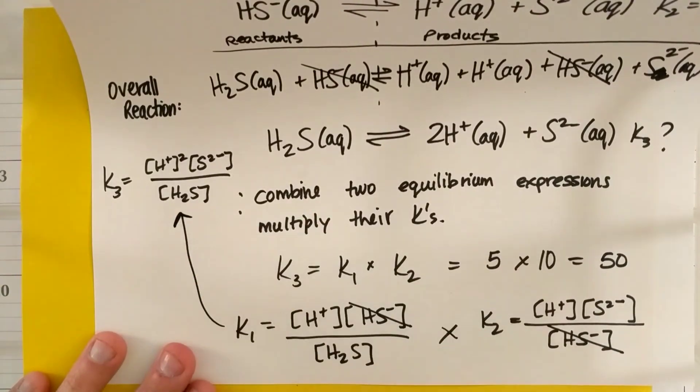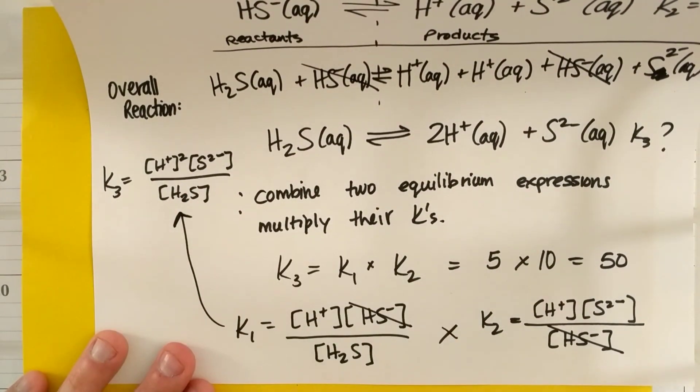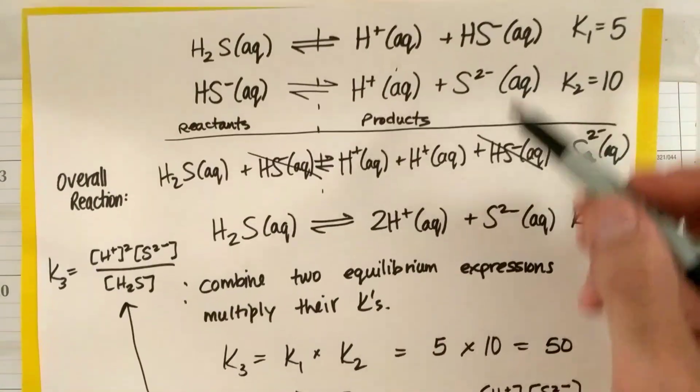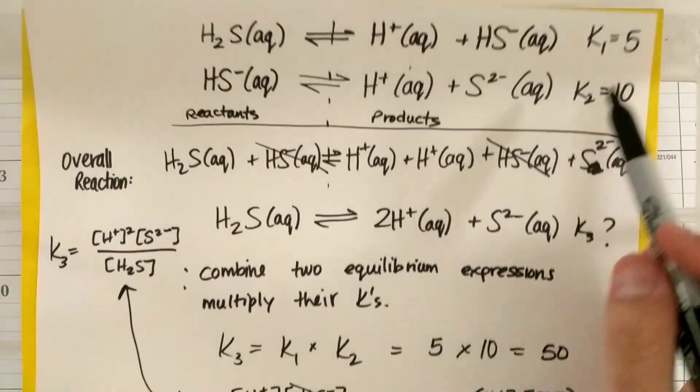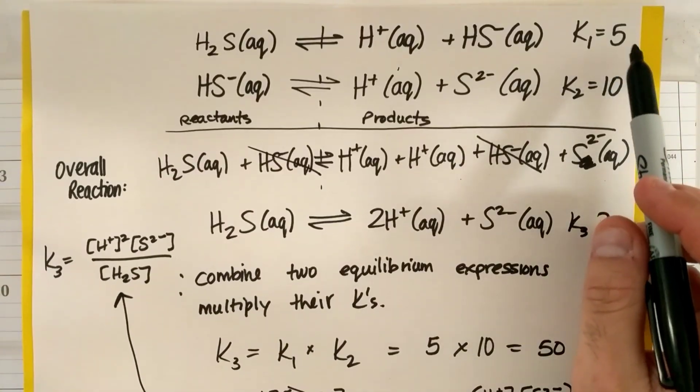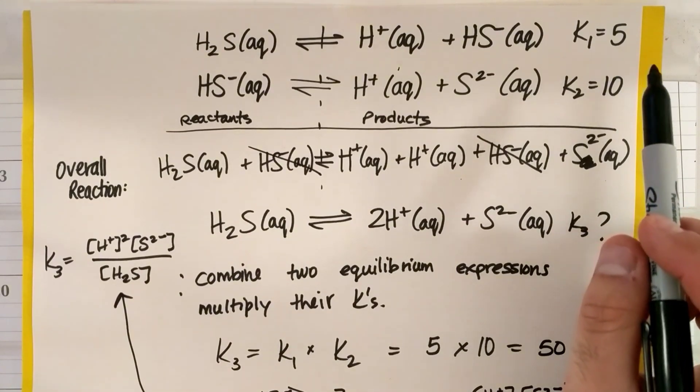And that'll look like this, where I have H plus squared, S2 minus, all over H2S. So again, in general, if I combine two reactions, I just multiply their K's. So I had a K1 was five, I made up this number. And this is your answer to question number eight on the problem set. So if you wanted to get a little bit of a help and head start on how to do that.